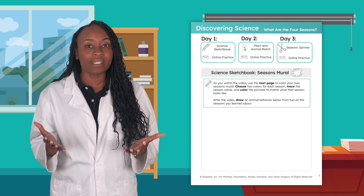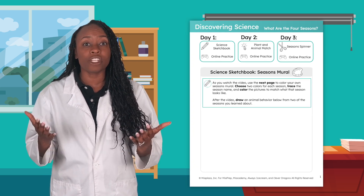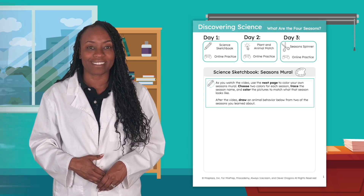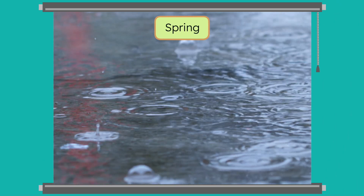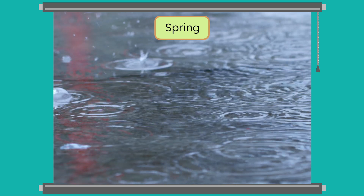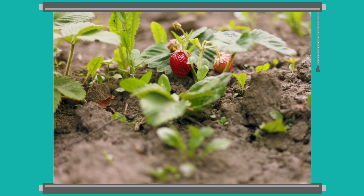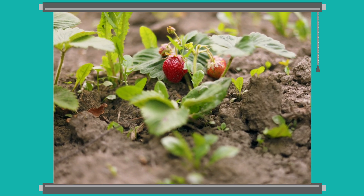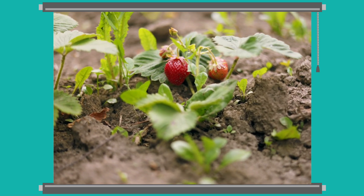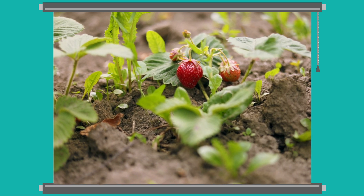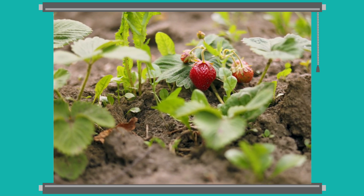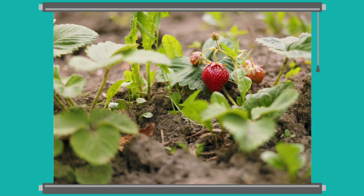Okay, so I know there are four seasons, but what makes each one different? As we discover each one, complete your mural in your science sketchbook. Let's start with spring. This is when the weather starts to get warmer, and it often rains a lot. Flowers are starting to bloom, and some plants even start to grow fruit, like strawberries. What colors do you think of when you hear spring? Make sure you use those colors for the spring portion of the mural in your science sketchbook.